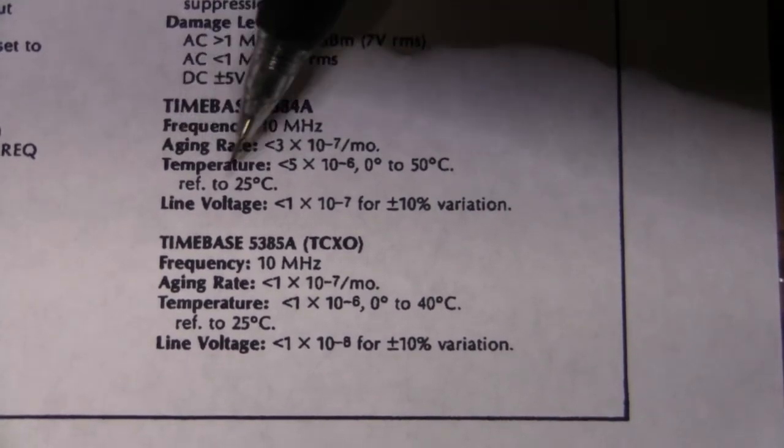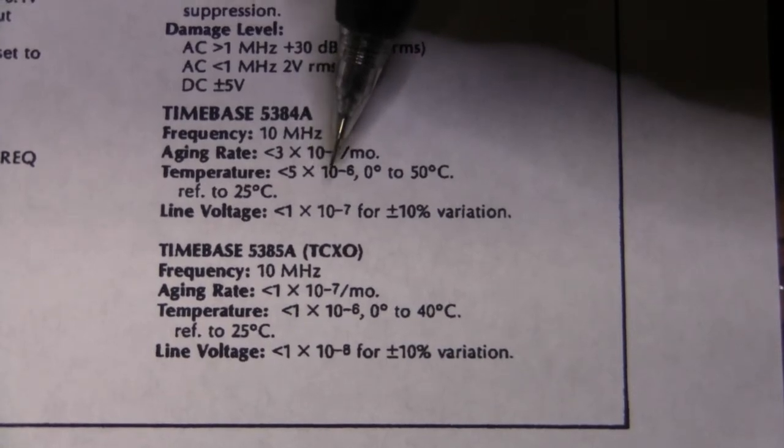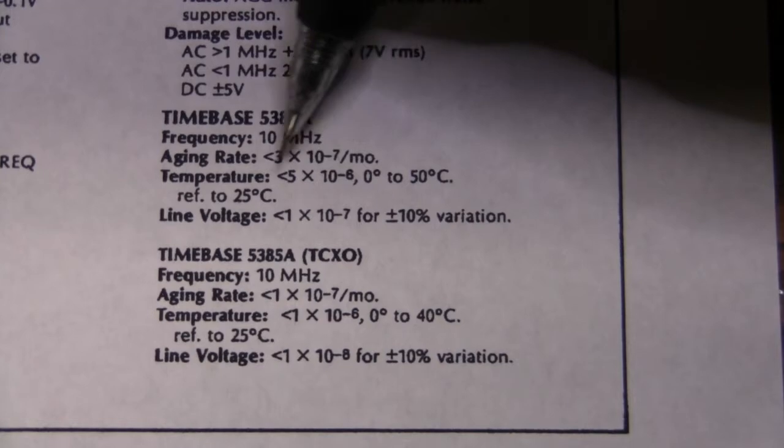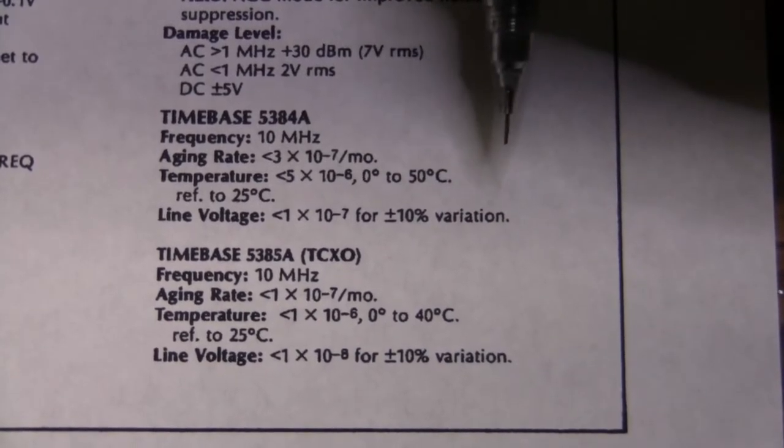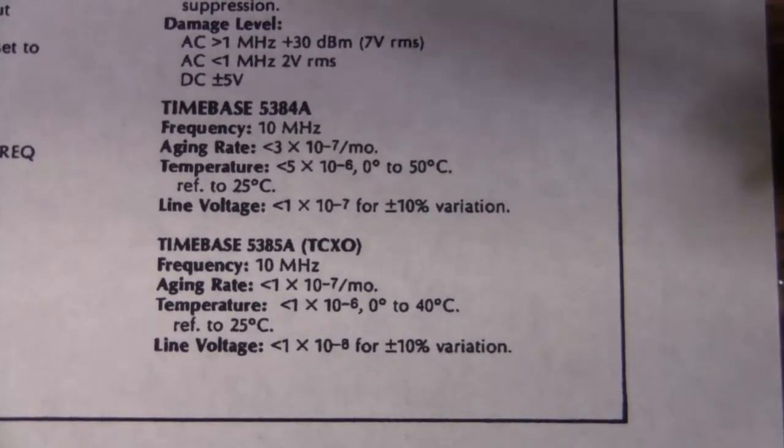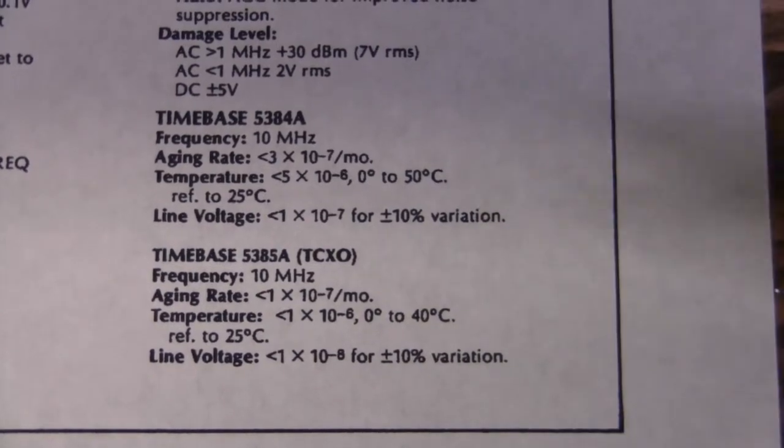And temperature drift is less than 5 times 10 to the minus 6, which is less than 5 ppm within this temperature range from 0 to 50 degrees C. So clearly those oscillators are more precise than this counter.